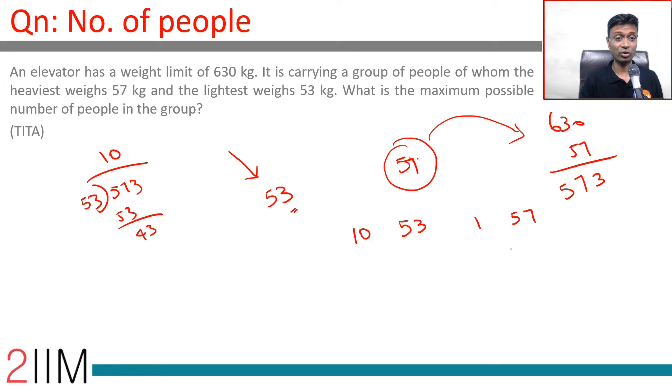An elevator has a weight limit of 630 kilograms. 10 people weighing 53 kilograms and one weighing 57 will take us to 530 plus 57 equals 587. We have room for another 43 kilograms.